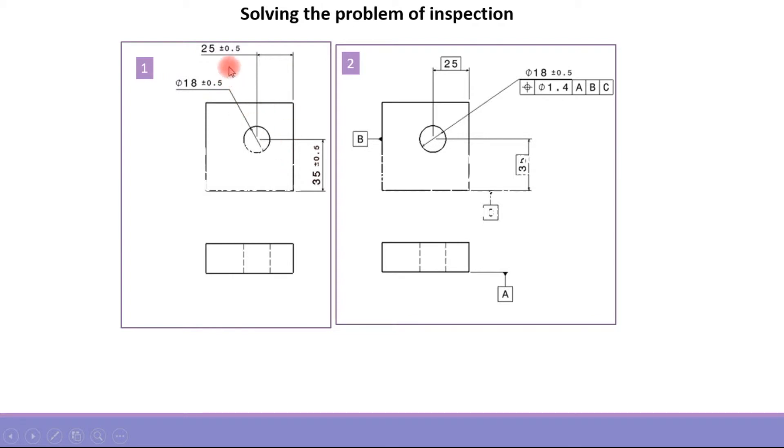25 plus or minus 0.5 and 35 plus or minus 0.5, but the first drawing is using the coordinate tolerancing or traditional method and the second drawing is using the GDNT method.